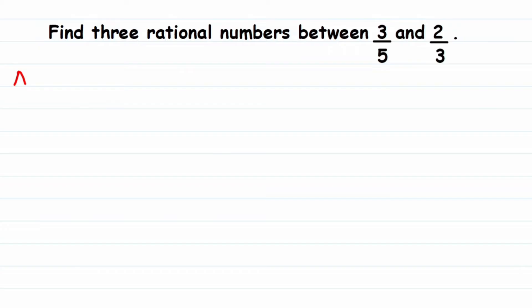Whenever two rational numbers are given, you have to check whether the denominators are the same or not. You can see here the denominators are 5 and 3, which are not the same. So we have to make them the same, and we can do that by taking the LCM of the numbers in the denominator, which are 5 and 3.